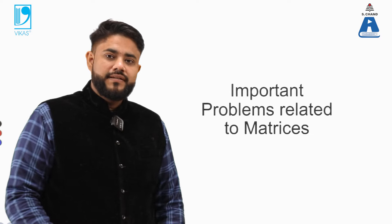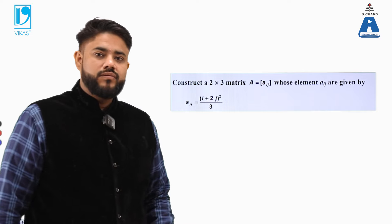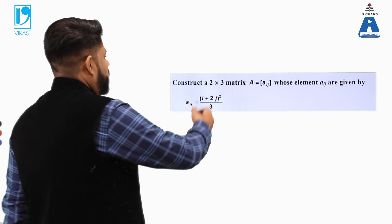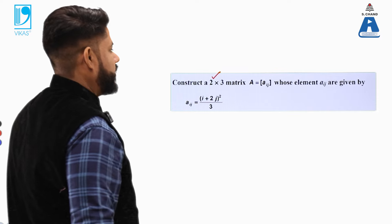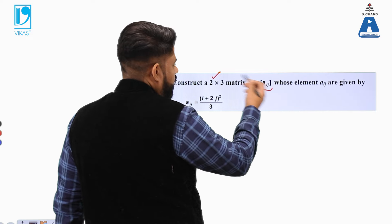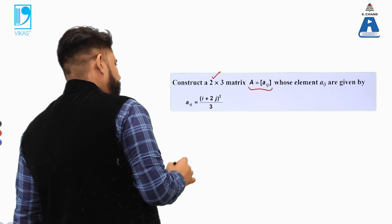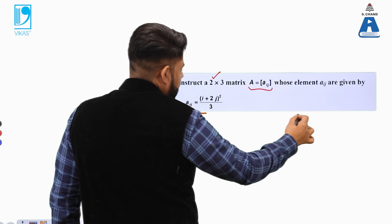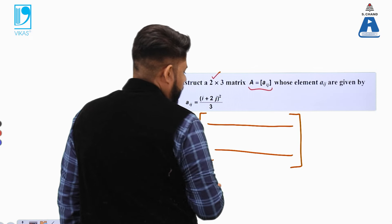The topic for today is important problems related to matrices. We will straightaway come to the question. The question requires us to construct a matrix of order 2×3, meaning 2 rows and 3 columns, where aij is given by a particular function. To do this, first note that a 2×3 matrix has 2 rows and 3 columns.